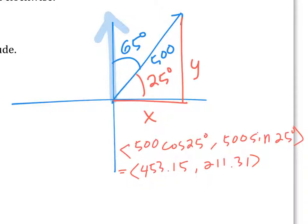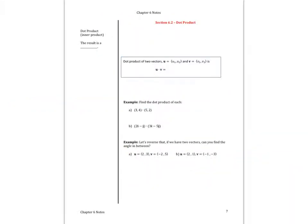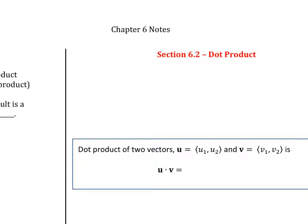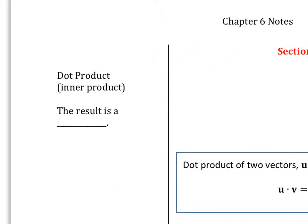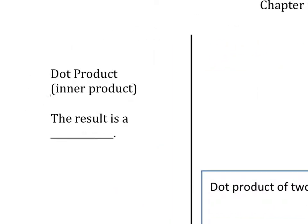Alright, so that is the end of section 1. We're going to section 2 — we're going to do the first part of section 2 today. The second part is a little bit tricky, so we'll spend a little more time on it. Okay, dot product — very important. Dot product has another name: it's called inner product.